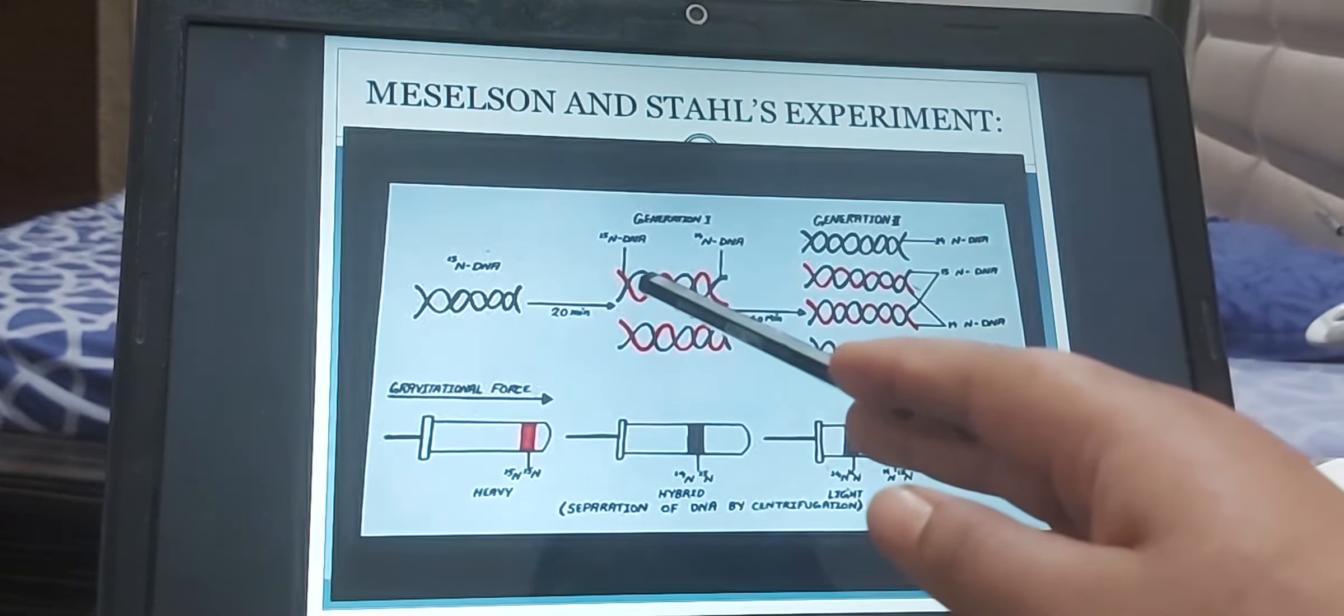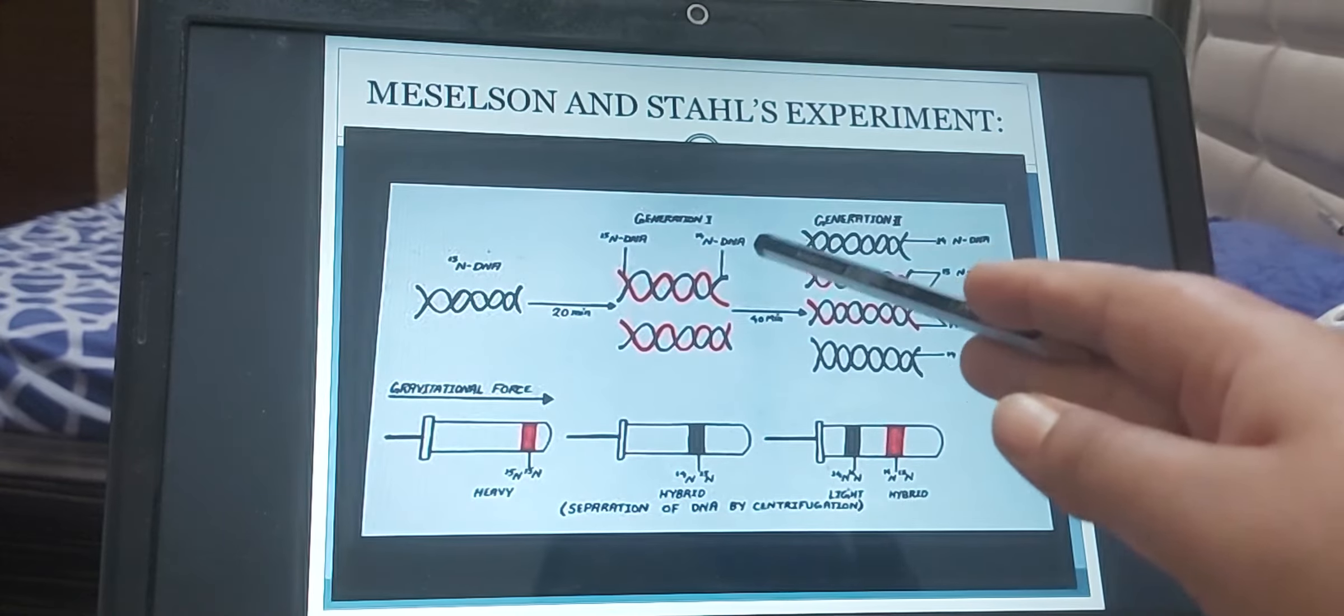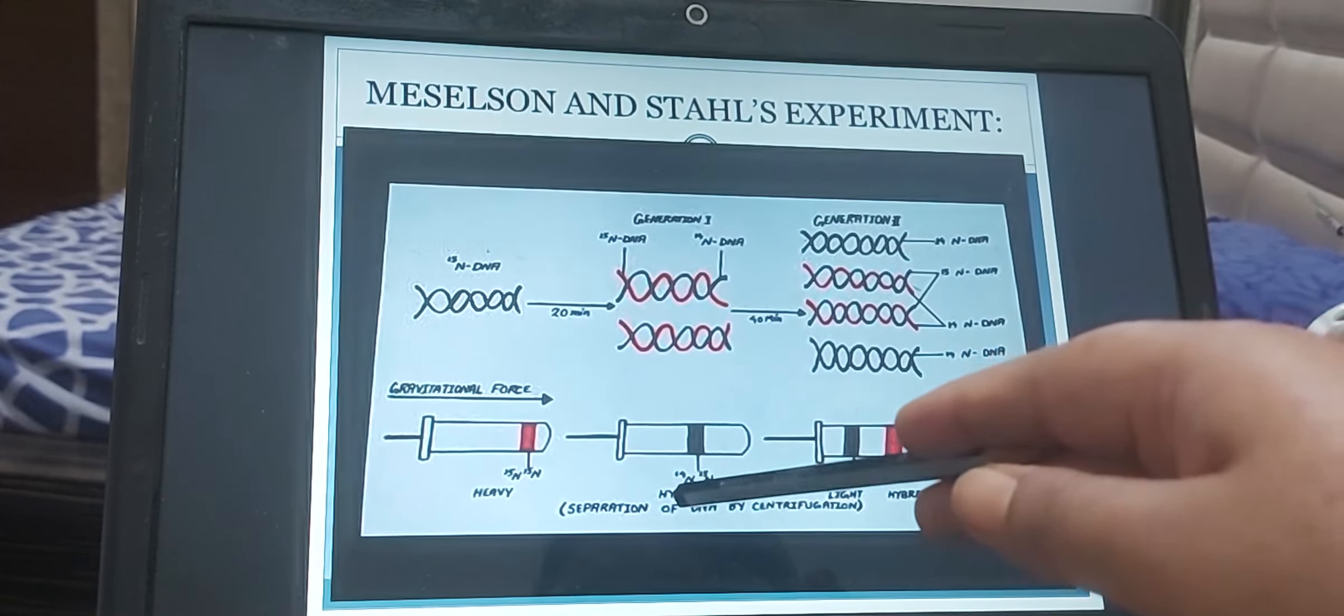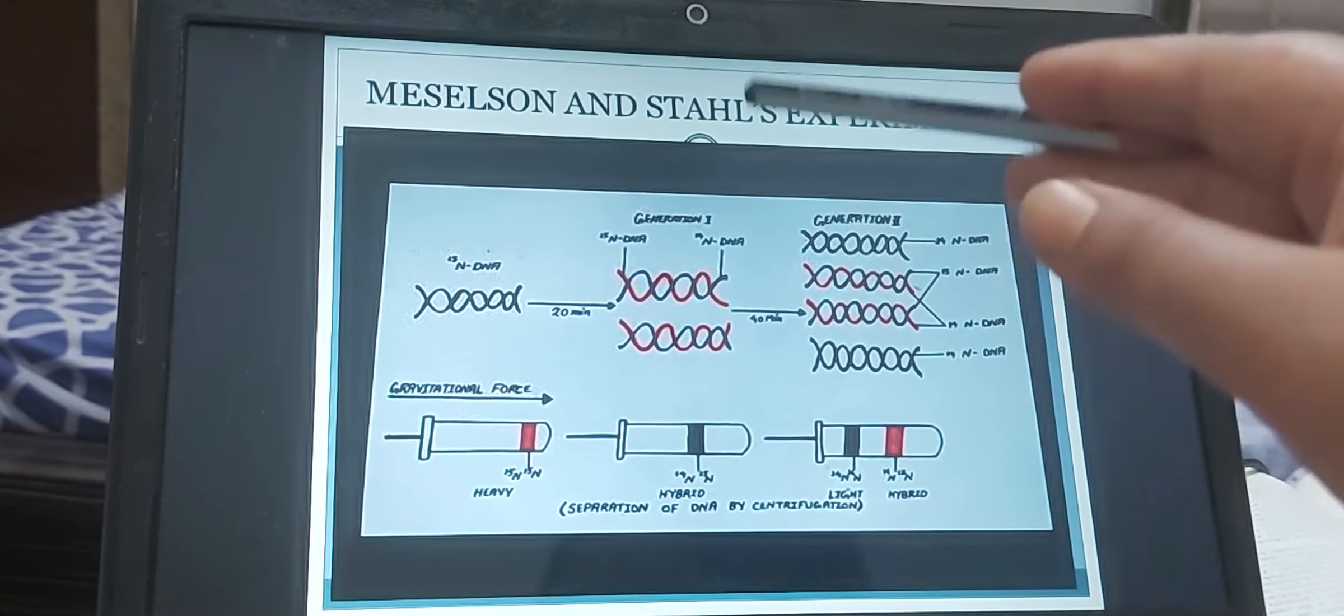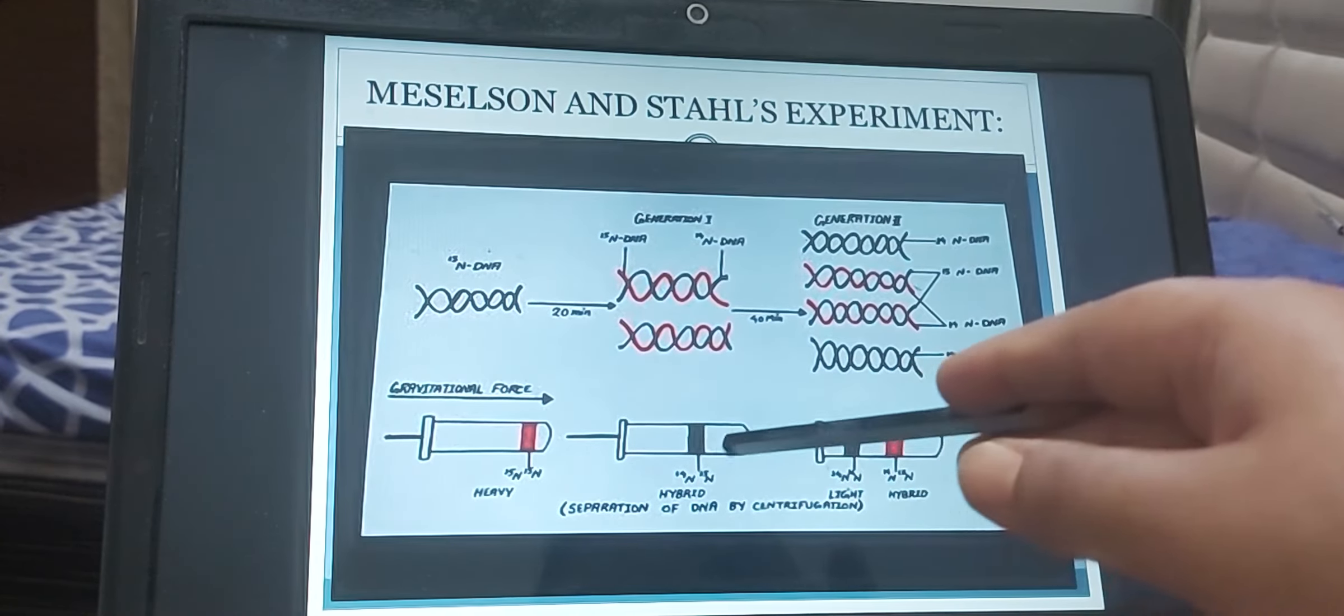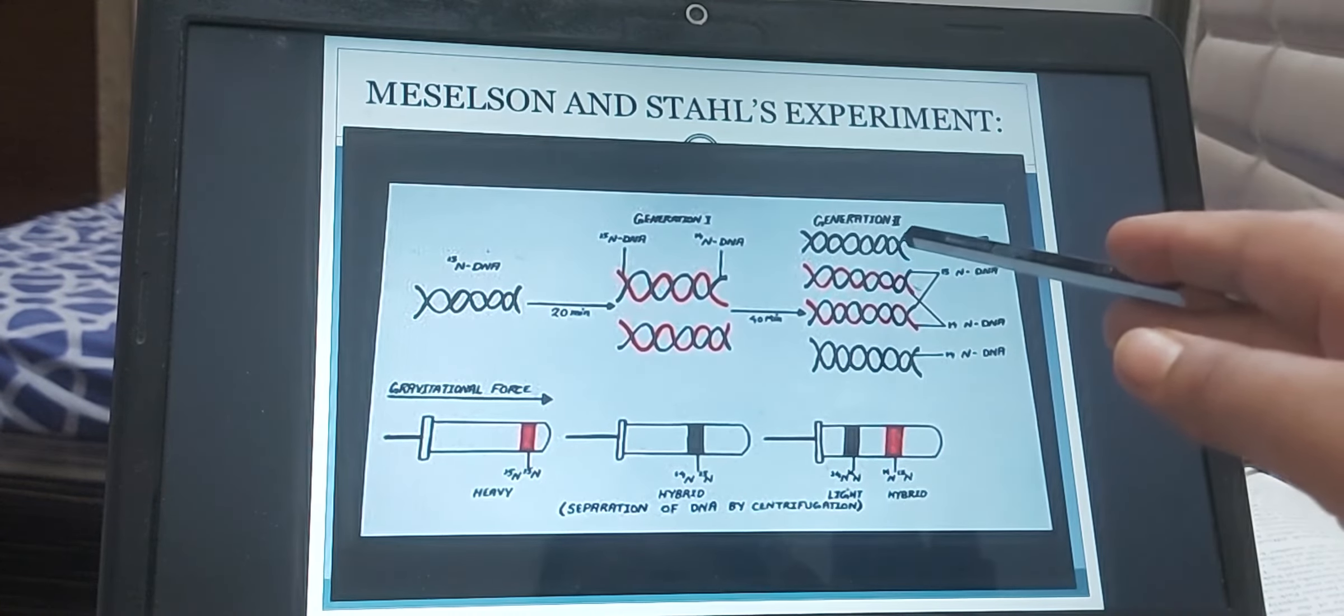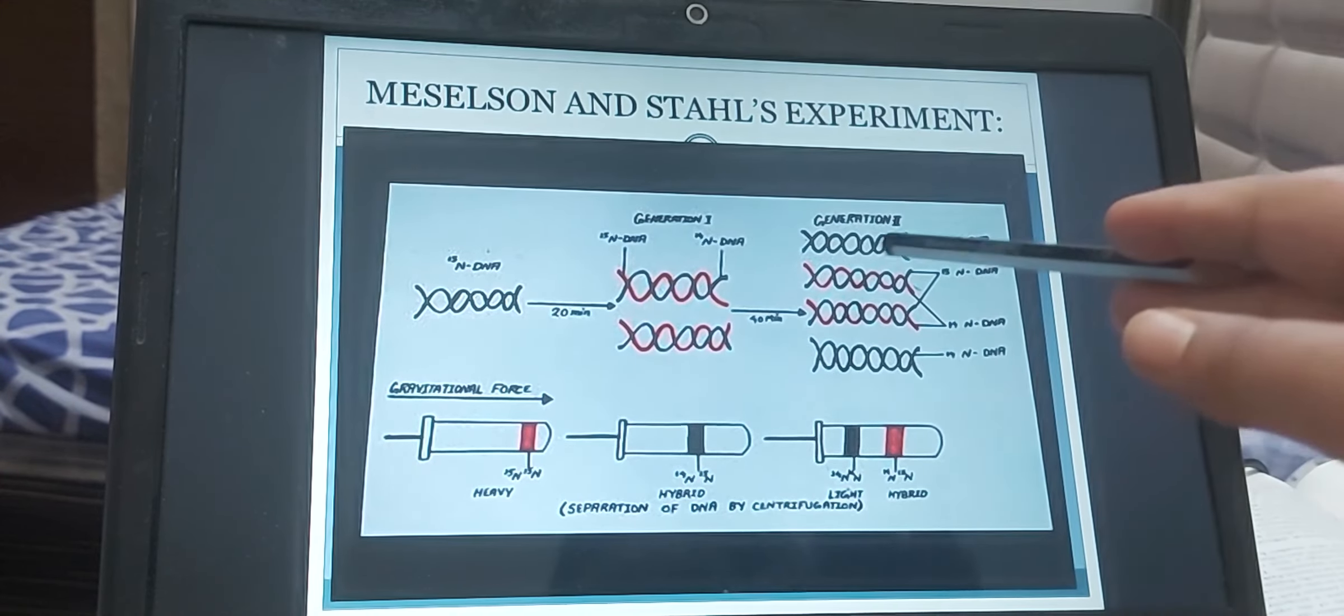So here you can see the red one is the N15, which is being taken from the parent. And the black one is N14, which is newly synthesized. So here you can see the DNA formed in two bacteria is hybrid type. Hybrid type having N15 and one strand is N15 type, one strand is N14 type. So when we separate it out through the density gradient method, we found this band at slightly above to the N15 type of band. Now, then again, it allow them to grow for the generation 2 for the next 20 minutes. That means after the 40 minutes, when he extracts the DNA.